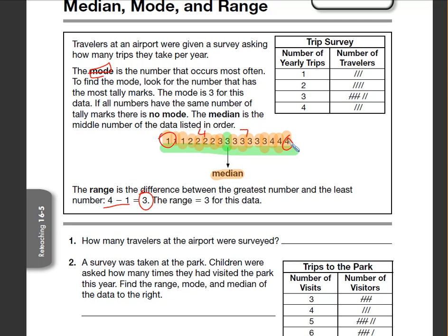And we have 1, 2, 3 1s. I'm sorry, 3 4s. And we have 1, 2, 3 1s. So which number do we see the most often? Well, it's the number 3. So 3 is the mode.